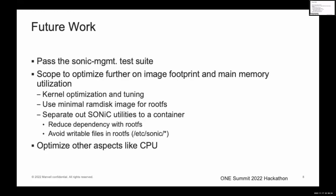Next, there is a lot of scope to further optimize the image size and main memory usage. For example, we can customize the kernel specific to the platform, which will reduce the kernel size and boot time. Also, the kernel loads the complete root file system today. The root file system of Debian is around 500MB. We should replace it with a minimal RAM disk image for the kernel root file system and have the Debian root file system mounted on the flash. SONiC commands and utilities are part of the root file system; instead, we can place these in a separate container to reduce the dependency with the root file system.